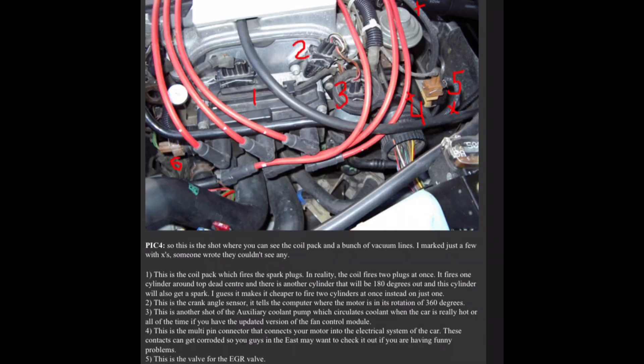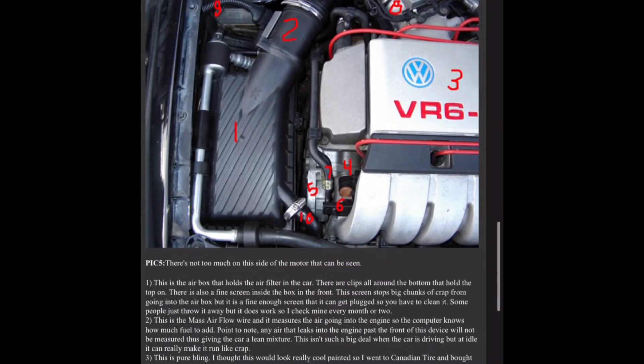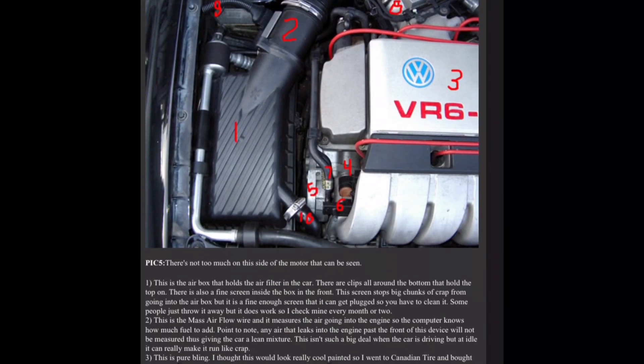Here's the passenger's side front, pick five. There's not too much on this side of the motor that can be seen. One, this is the airbox that holds the air filter in the car. There are clips all around the bottom that hold the top on. There is also a fine screen inside the box in the front. This screen stops big chunks of crap from going into the airbox, but it is a fine enough screen that it can get plugged so you have to clean it. Some people just throw it away but it does work, so I check mine every month or two. Two, this is the mass air flow wire and it measures the air going into the engine so the computer knows how much fuel to add. Point to note, any air that leaks into the engine past the front of this device will not be measured, thus giving the car a lean mixture.